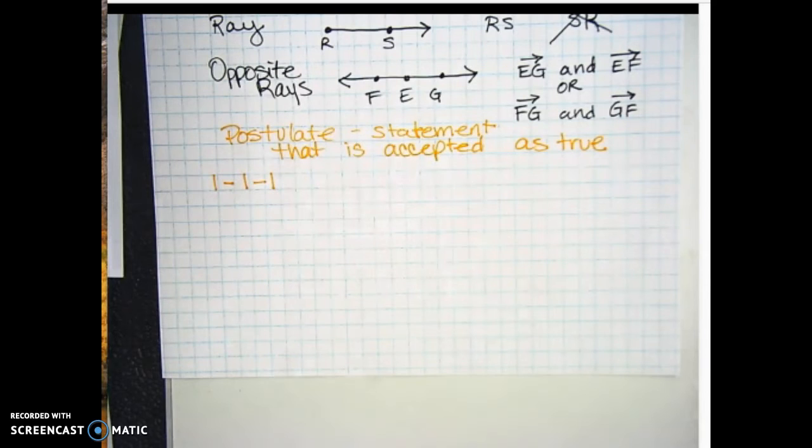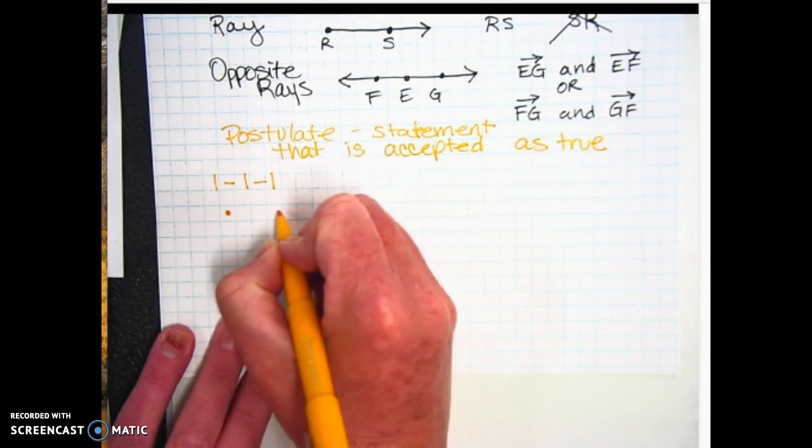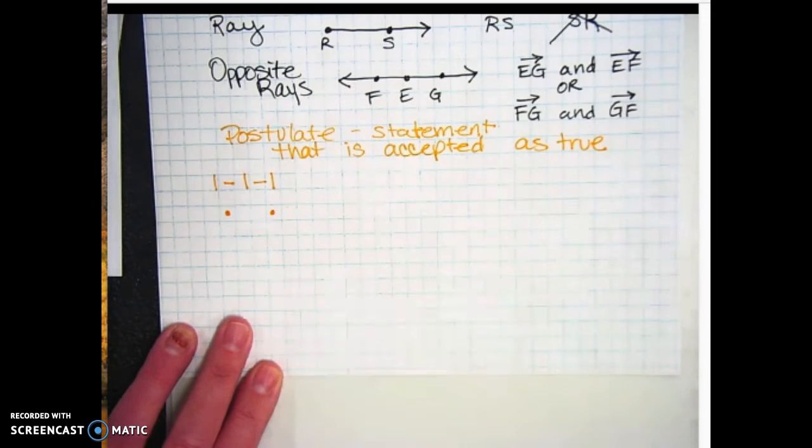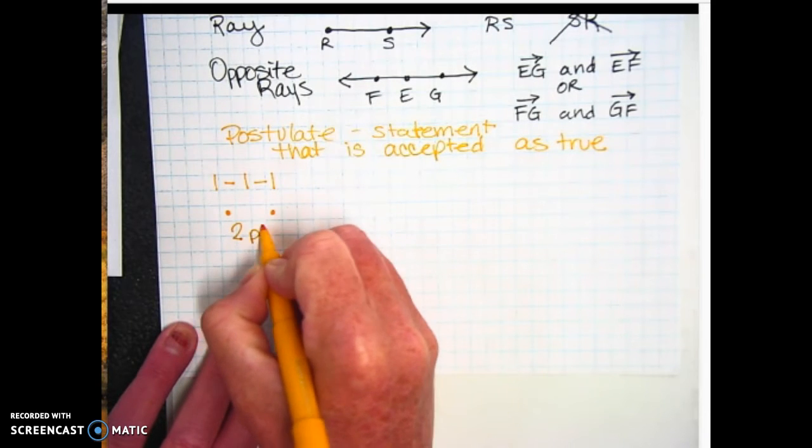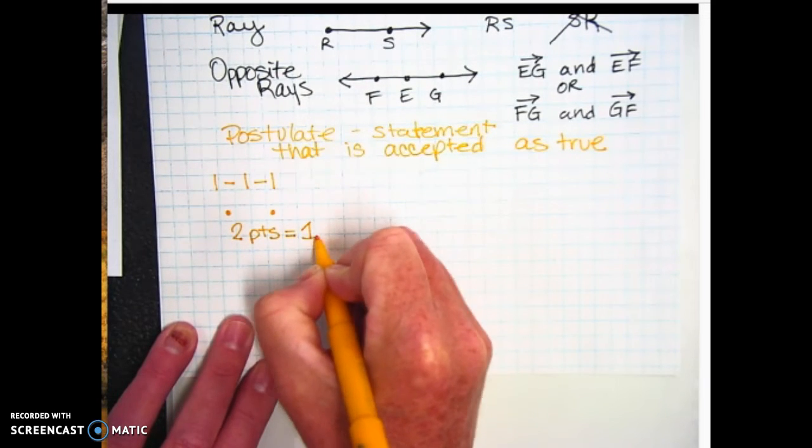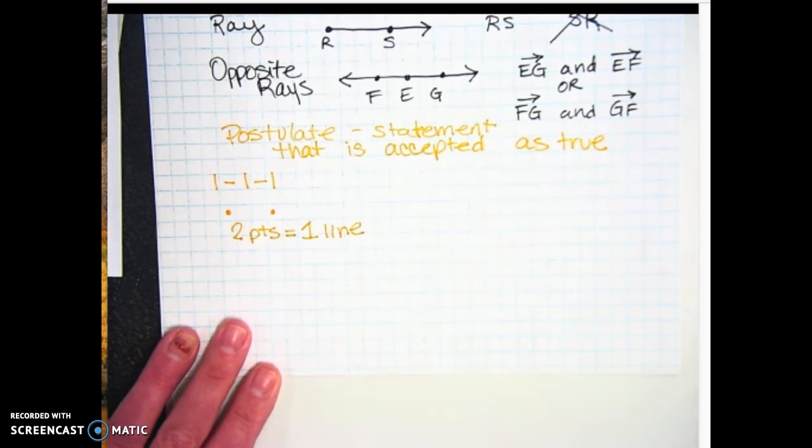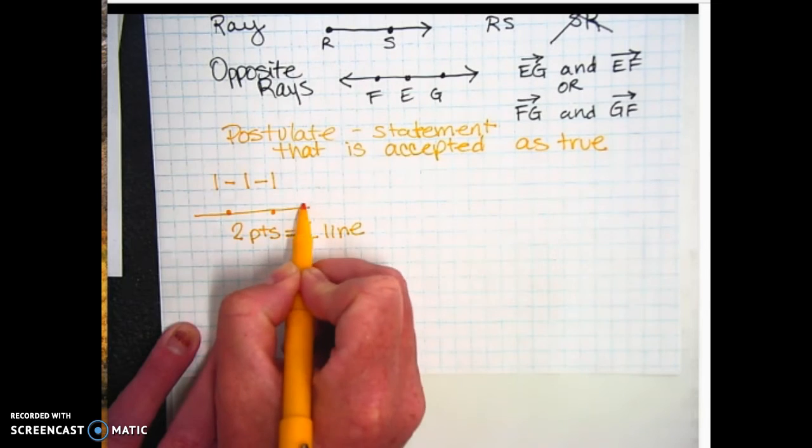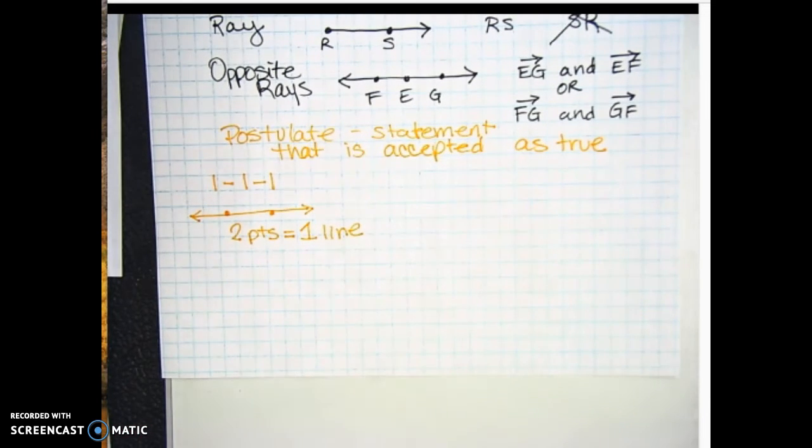And here's what it says. It says through any two points, there is exactly one line. So the other day when we were working in the Algebra 1 review book, we were drawing a line. And I said to you guys, how many points do I need to make a line? And you said, two. So this postulate basically says two points are going to equal one line. I was going to make you write out the whole thing, but I figured out a way to make it shorter. So we're going to take our two points through them. We're going to draw one line. And that postulate is just basically this statement. Everybody says, oh, yeah, that's true. You have two points. It makes one line. It's kind of obvious, right? Two points, one line.